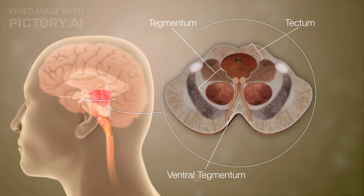The midbrain, the smallest part, includes the tectum and tegmentum, which are crucial for sensory information and body movements.